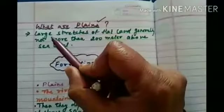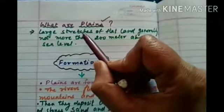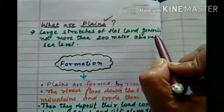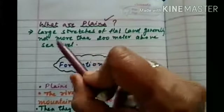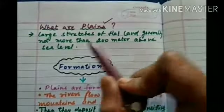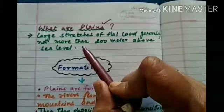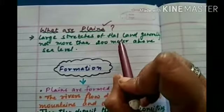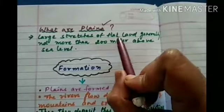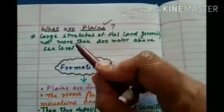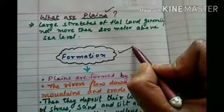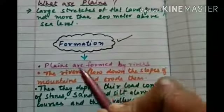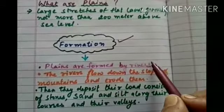Our next topic is plains. Plains are large stretches of flat land, generally not more than 200 meters above sea level. The flat land on which we all are living comes under plains. Formation of the plains — plains are formed by rivers.